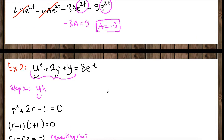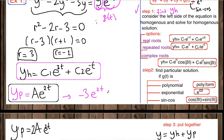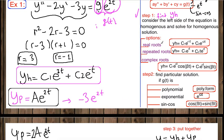As a reminder: when you have two distinct real roots, y_h = c1·e^(r1·t) + c2·e^(r2·t). When you have repeated roots, y_h = c1·e^(r·t) + c2·t·e^(r·t) — note the extra t multiplying the second term.